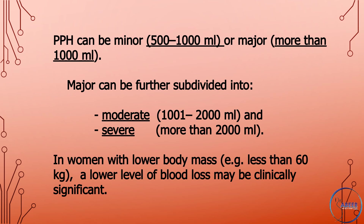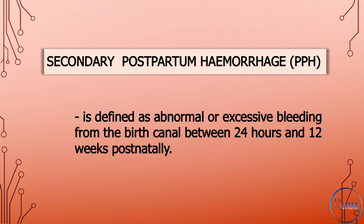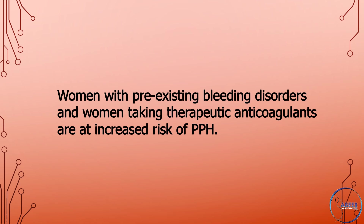Major can be further subdivided into moderate, 1,001 to 2,000 milliliters, and severe, more than 2,000 milliliters. In women with lower body mass, for example less than 60 kilograms, a lower level of blood loss may be clinically significant. Secondary postpartum hemorrhage is defined as abnormal or excessive bleeding from the birth canal between 24 hours and 12 weeks postnatally. Women with pre-existing bleeding disorders and women taking therapeutic anticoagulants are at an increased risk of postpartum hemorrhage.